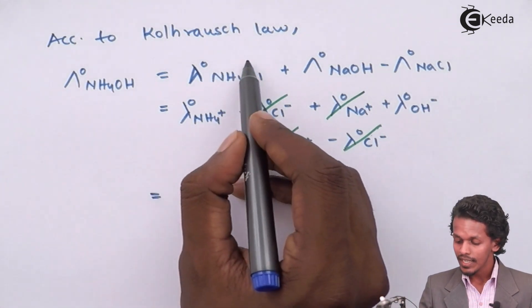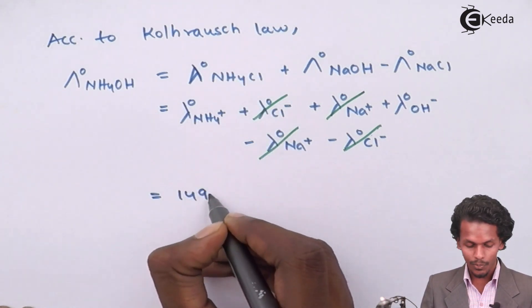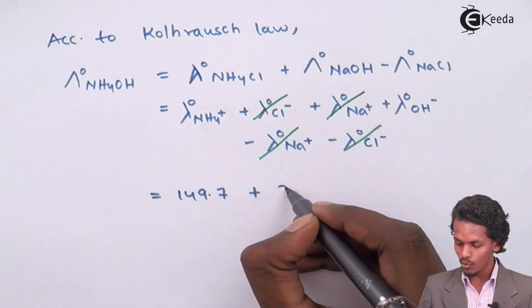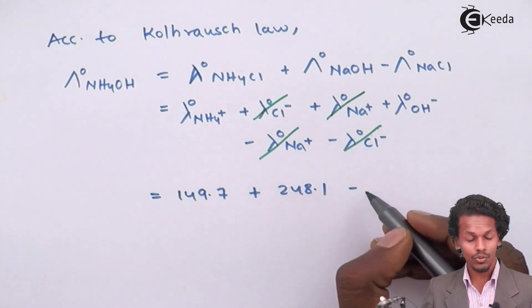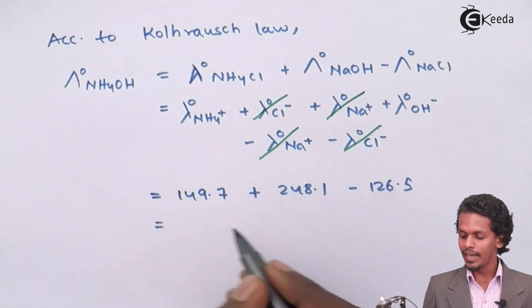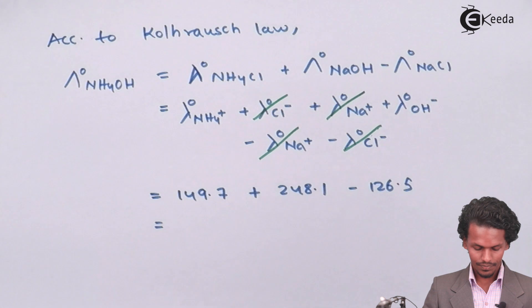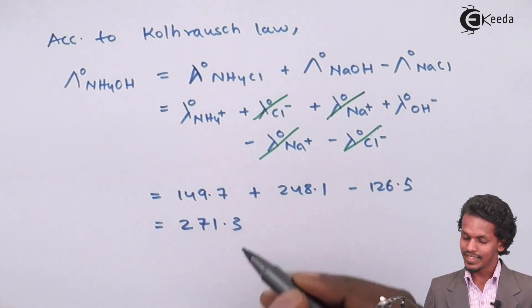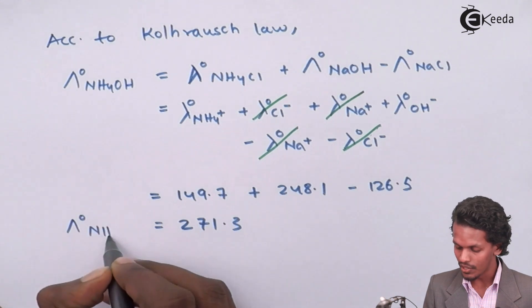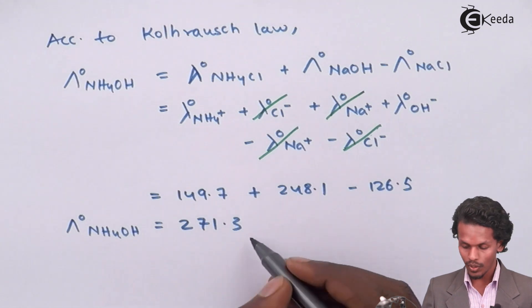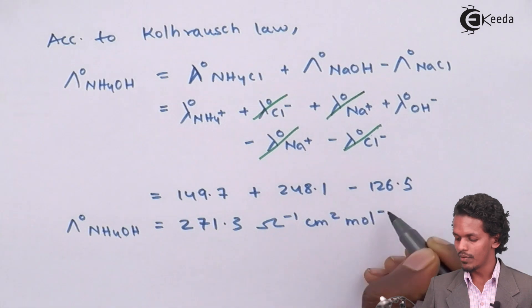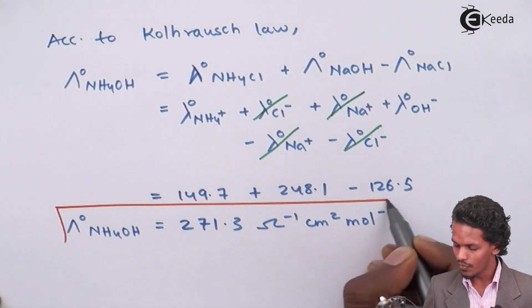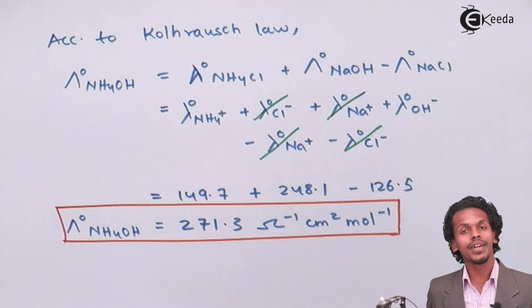So therefore what I could write is, the molar conductivity of NH4Cl which was 149.7, and that of NaOH if I add it, I get 248.1, and I have to subtract NaCl so I subtract 126.5. By doing this calculation, I get 271.3 as the answer for lambda naught for NH4OH. But the unit is very necessary to be mentioned, so ohm inverse centimeter square mole inverse.